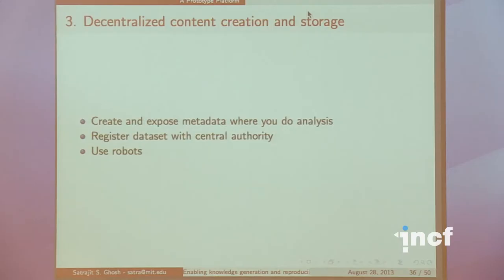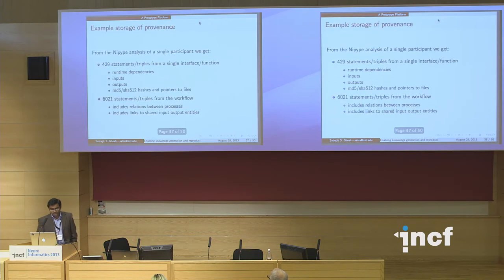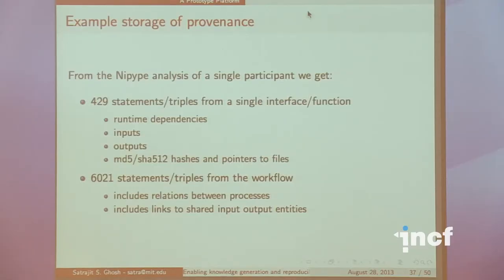Decentralized content creation and storage: we can create and expose metadata where we do the analysis, not necessarily in a centralized base, although registering the data set with a central authority can help. We can use robots — much like Google has done to mine the web — to mine these data sets. Storage of provenance from an analysis gives us things like runtime dependencies, inputs and outputs, MD5 hashes — all the things you would want to capture to reproduce an analysis. In terms of a workflow, we get relations between processes and links to shared input-output entities.